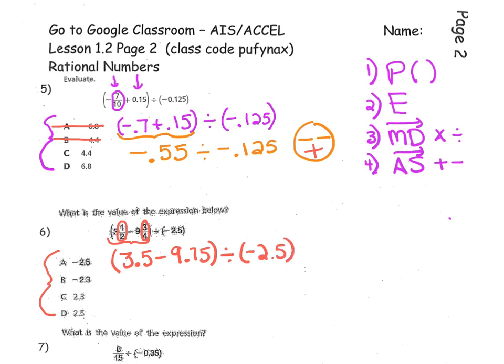Now grab your calculator and get rid of the parentheses. You need to take 3.5 minus 9.75. You should have gotten negative 6.25. And we still have to divide by a negative 2.5.